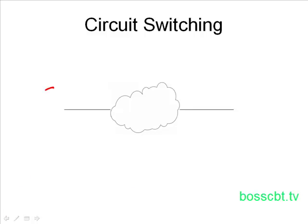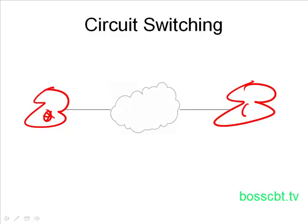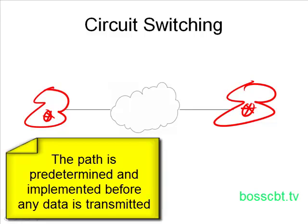Let's imagine we have two telephones — one phone and another phone. They both have landlines and are connected to the telco provider, which is the cloud in the middle. Before voices can be transmitted between the two, a path has to be decided upon and implemented. With circuit switching, before any data — in this instance any voice traffic — is carried across the two, a path has to be determined and implemented.